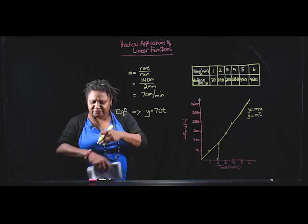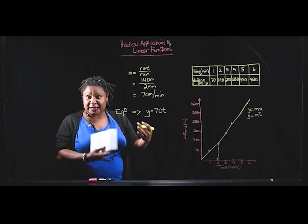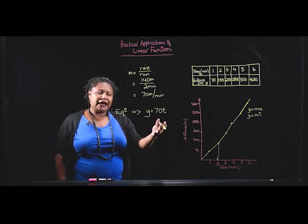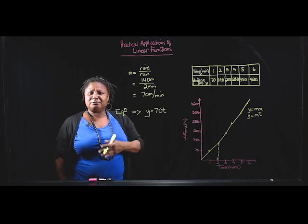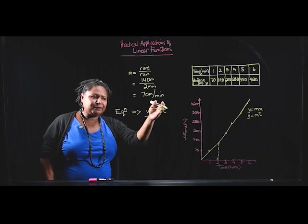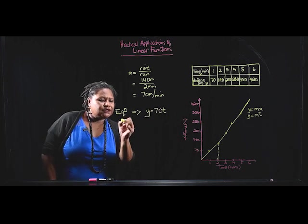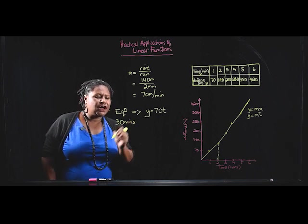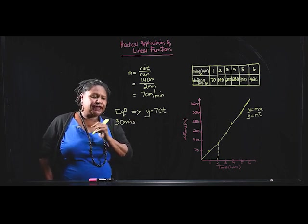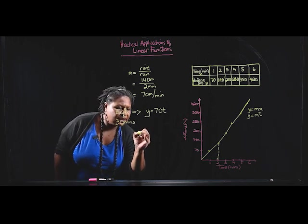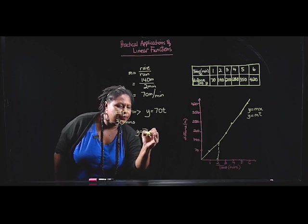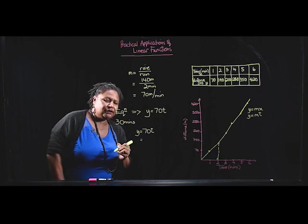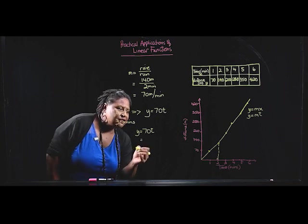So, rather than running another 30 minutes and looking at the time at the same time as she's running, she can simply use the equation to find the distance covered in 30 minutes. How do we do that? We simply substitute. So, 30 minutes is the time. We want to find out how much distance we cover in 30 minutes. So, using the equation, y is equal to 70t.